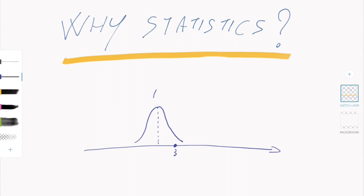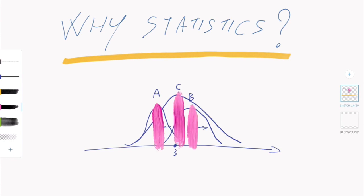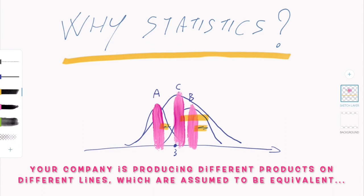You might have a production line called A, another called B, and another called C. As you can see from this picture, all of your lines have different standard deviations and different locations — meaning different mean values. On average you might appear to be around three, but actually you are producing three distinct families of products with three different locations and three different standard deviations. Your product is not one product — you are selling three distinct products as the same product, and obviously this is not a good thing.